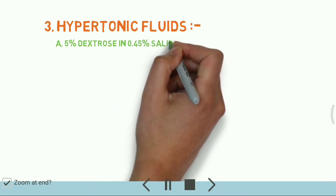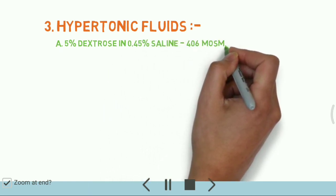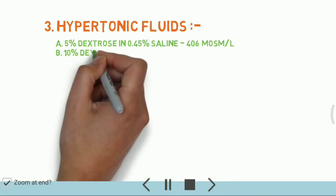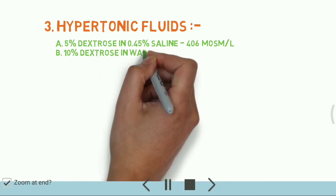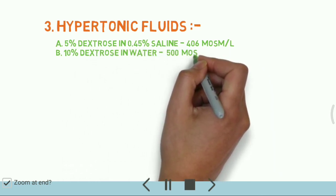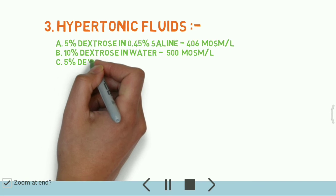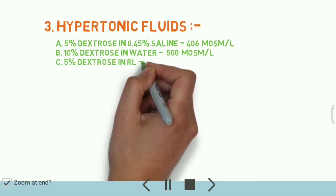For the hypertonic fluids: 406 milliosmoles per liter. Next one, 10% dextrose in water has 500 milliosmoles per liter. 5% dextrose in Ringer lactate: 525 milliosmoles per liter.